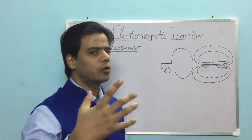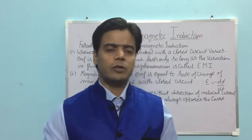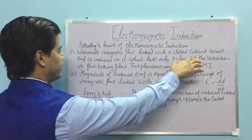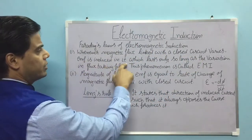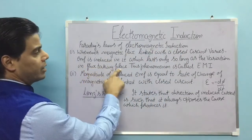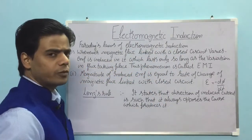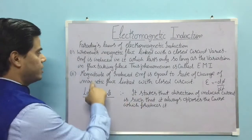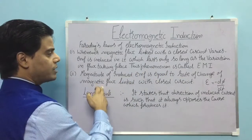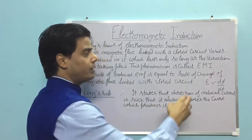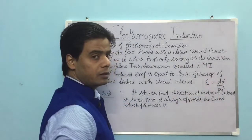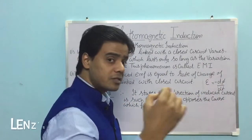From this experiment we can formulate Faraday's laws of electromagnetic induction. The first law states that whenever the magnetic flux linked with a closed circuit varies, an EMF is induced in it, which lasts only as long as the variation of flux is taking place — this phenomenon is called electromagnetic induction (EMI). The second law states that the magnitude of induced EMF is equal to the rate of change of magnetic flux: EMF = −dΦ/dt.